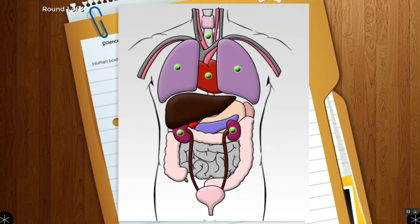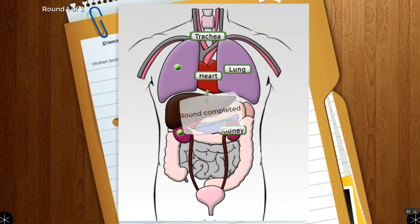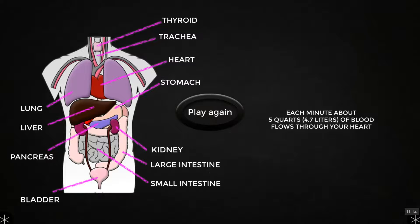As in the Bones app, after labels are placed, incorrectly placed labels give off a flashing red glow. If the labels are correctly placed, feedback is provided. At the end of the rounds, an image with labeled organs appears for reference. The students have the option to play again.